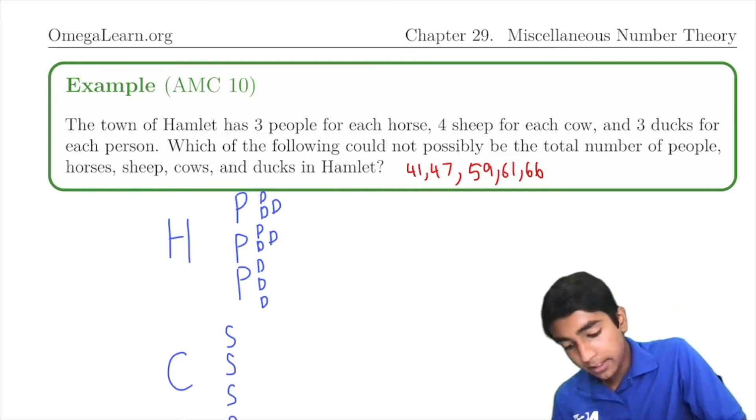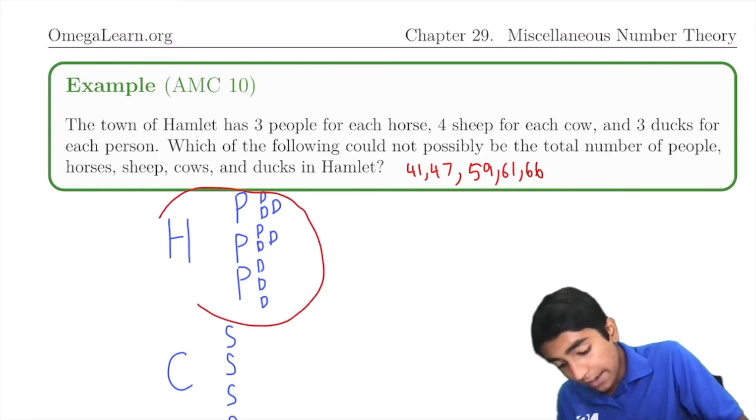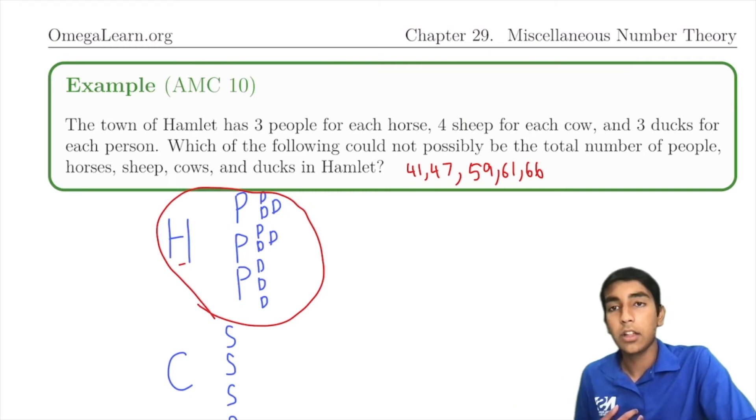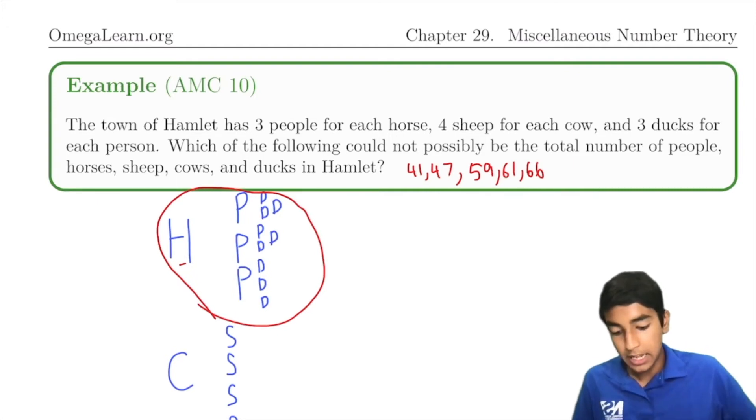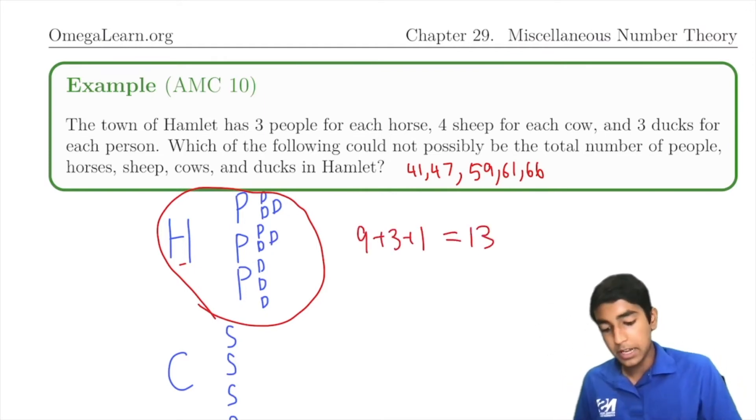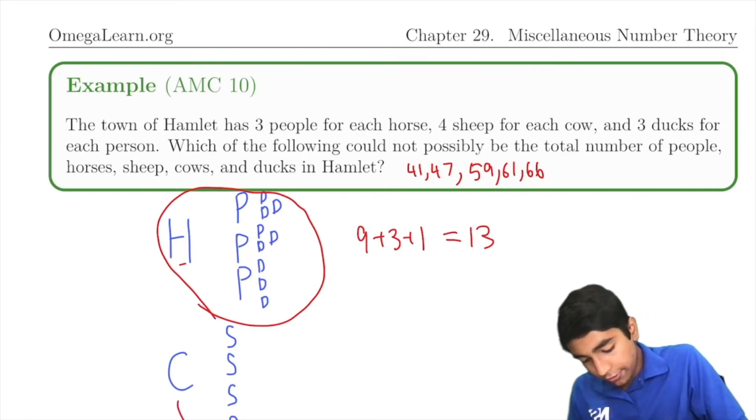The key thing here is that you can think of one of these units as a group. For every horse, there's 3 people. For every 3 people, there's 9 ducks. In total, there's going to be a total of 9 + 3 + 1 = 13 in this group here. And in this group, there's just 5.